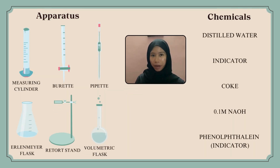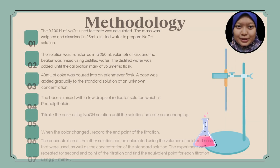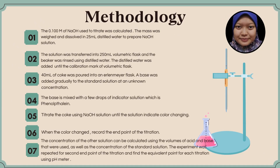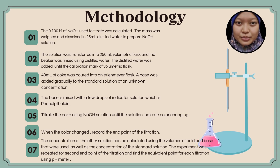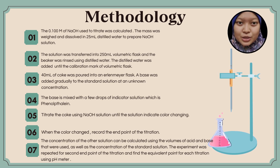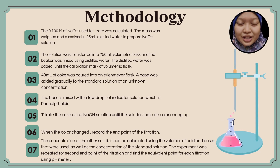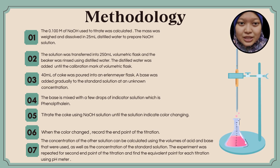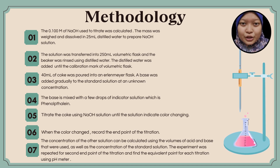Here are the apparatus and chemicals used in our experiment. First, 0.1 mol of sodium hydroxide used to titrate was calculated. The mass was weighed and dissolved in 25 ml distilled water to prepare the sodium hydroxide solution. The solution was then transferred into a 250 ml volumetric flask and the beaker was rinsed using distilled water. Distilled water was added until the calibration mark of the volumetric flask.